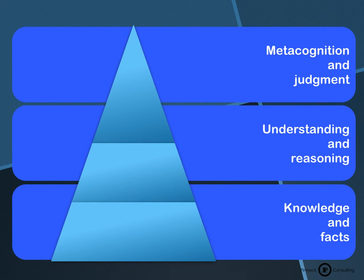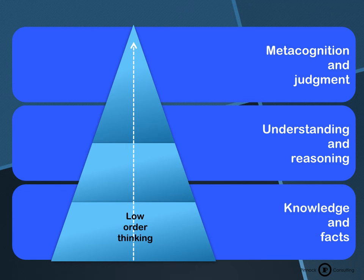The three levels we need to ensure we're teaching and assessing are: low-order thinking, which is knowledge and facts; middle-order thinking, which is understanding and reasoning; and highest-order thinking, which is metacognition and judgment.